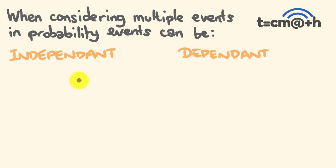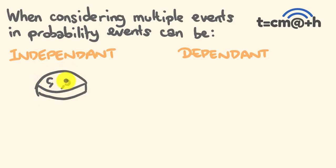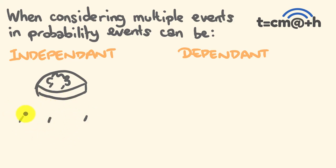I'll give you an example of this. Say I was tossing a coin. We have the first toss, the second toss, the third toss. Say I was trying to get heads on each one — what you'd probably realize is that each individual toss would not be affected by what had previously happened. It would be completely and utterly independent.